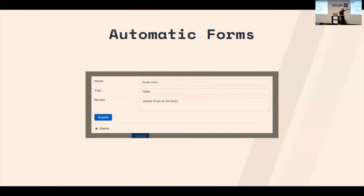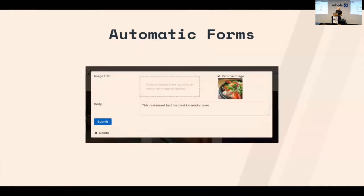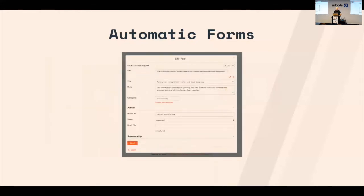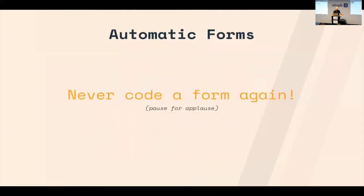Vulcan can also generate forms automatically from your schema — similar to the AutoForm package in traditional Meteor. Since we have the permission system, if a user cannot edit a field, that field simply won't show up in the form. You can use any type of form field since it's all React. Here's an example using the React Dropzone plugin to make an image upload widget. You can make complex forms with field sets, and even pre-fill fields based on other fields — for example, filling in the URL pre-fills the title and body. The goal is for you to never have to code a form again.